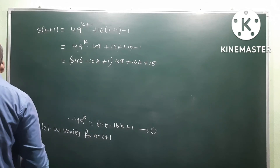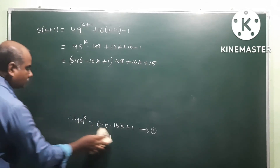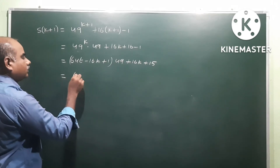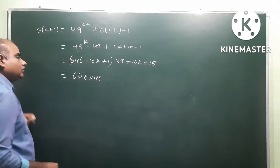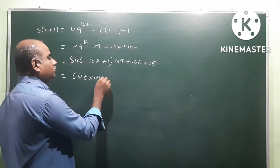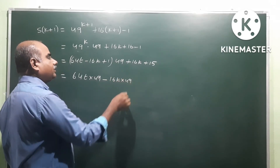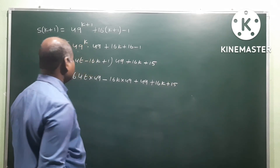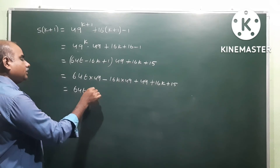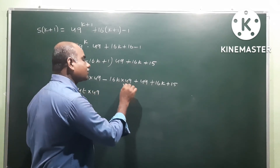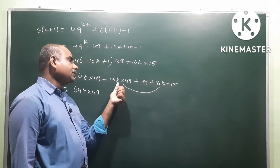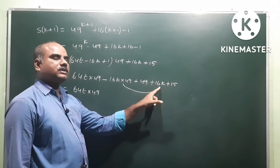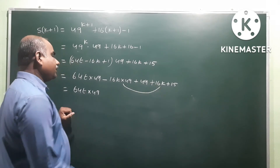Expanding: 64t × 49 - 16k × 49 + 49 + 16k + 15. Collecting like terms for 16k: -16k × 49 + 16k = 16k(-49 + 1) = -16k × 48 = -768k. And 49 + 15 = 64.